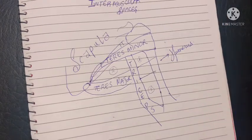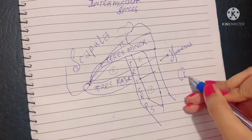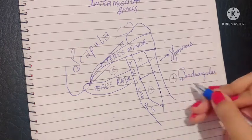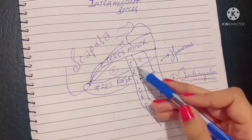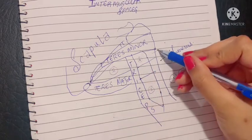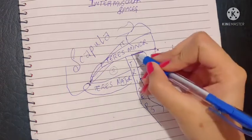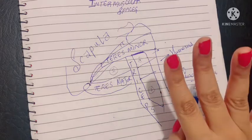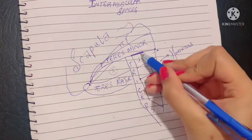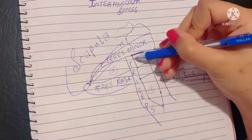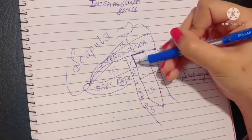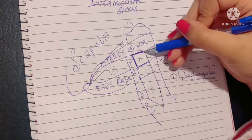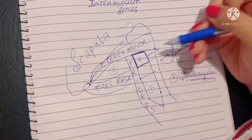The first space is the quadrangular space — the name says it, it has four sides. Superiorly, the boundary is the lower border of teres minor. Medially is the lateral border of the long head of triceps. Inferiorly is the upper border of teres major. And finally, laterally is the surgical neck of the humerus.